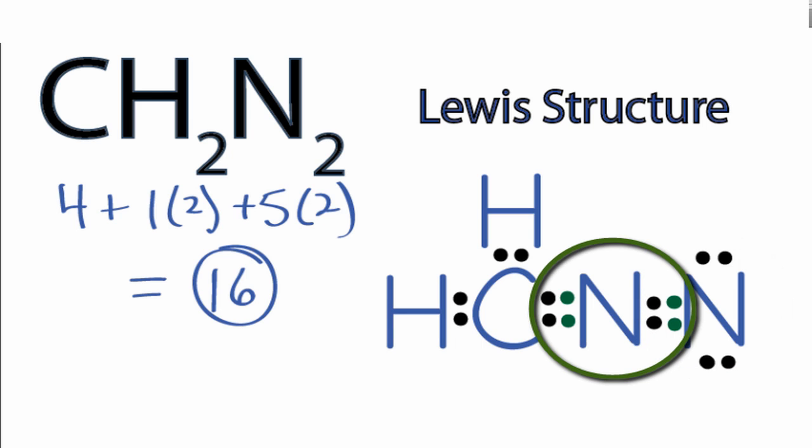So, at this point, we've used 16 valence electrons, and we've given octets to the carbon and the nitrogens, and then the hydrogen has 2 valence electrons, so its outer shell is full as well. So, this is the Lewis structure for CH2N2